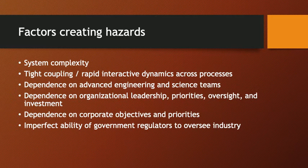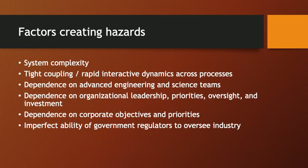Third, there is a dependence on advanced engineering and science teams. The design of a nuclear power plant, or a chemical or gas plant — any really huge complex system — requires breaking the design problem down into multiple parts. When we look at the Boeing 737 MAX, we see the effort to modularize the design process for the attitude control system, which was implemented with disastrous consequences. Managing the design process through teams of advanced engineers with design specifications can itself give rise to errors and unintended cross-connections across different processes.